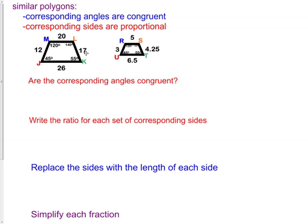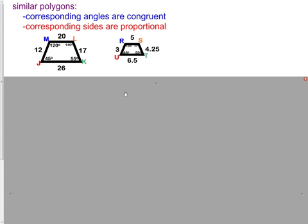Here we have two quadrilaterals. They happen to look a lot like trapezoids. That doesn't matter, although we can kind of do a visual check to see if they seem to be the same. Our first check is, are the angles congruent? 120 to 120. Going clockwise around the figure, 140 to 140, 55 to 55, and 45 to 45. The corresponding angles are indeed congruent.